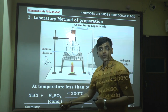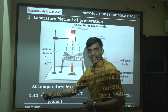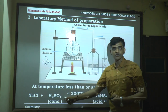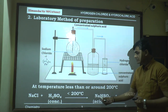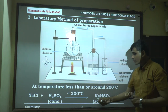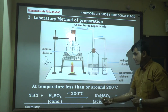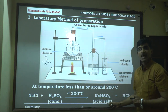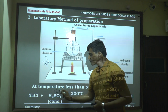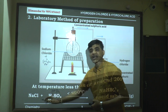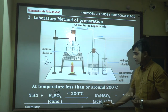The reaction: NaCl + concentrated H2SO4 at temperature below 200°C gives sodium hydrogen sulfate (NaHSO4) plus hydrogen chloride gas. Sodium hydrogen sulfate is also called sodium bisulfate and is classified as an acid salt, because in H2SO4 only one H is replaced by sodium, giving NaHSO4.